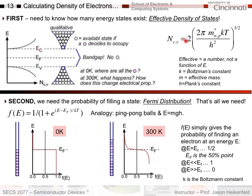This effective density of states is more like an average. The second thing we need is to know the probability of filling those states. If we know the number of states, what is the probability that we will fill them? That is a critically important concept in this course called the Fermi distribution. With this in addition, that's all we need. I'm going to use something I call the ping-pong ball analogy to describe the Fermi energy and the Fermi distribution.